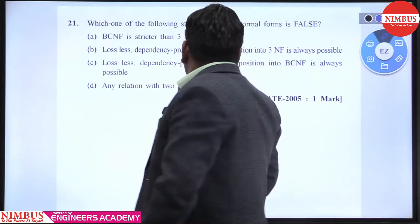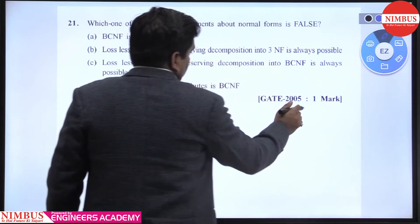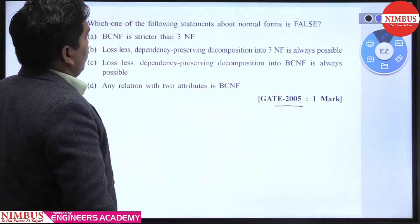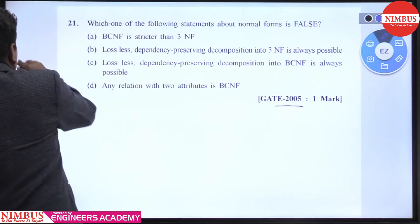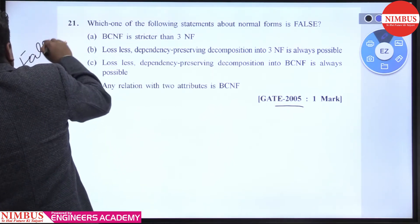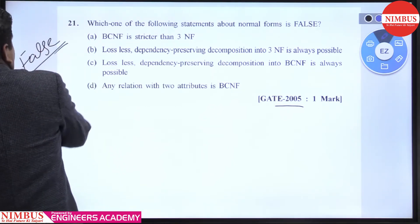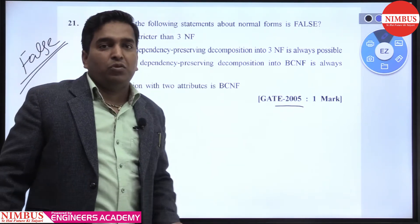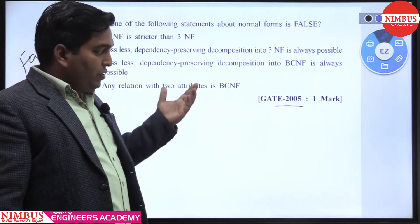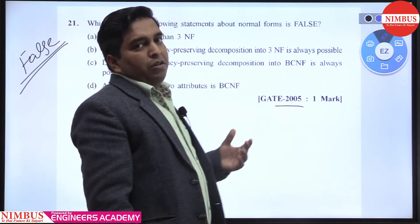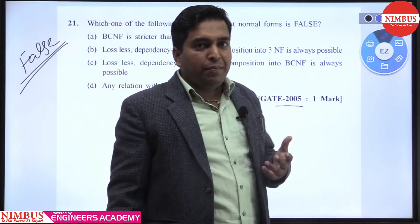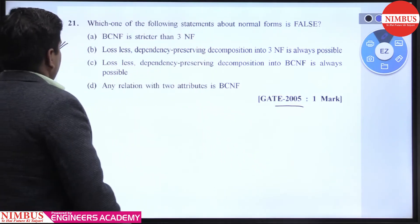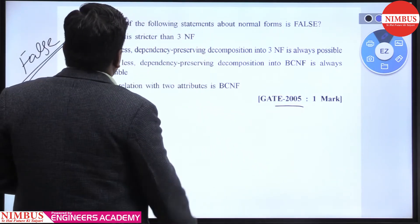Hello students. This is GATE 2005 question, which asks: which one of the following statements about normal forms is false? It is asking about the false statement. There are four options given. This type of question also came in GATE 2020, which we already discussed when we solved that gate paper. The first option is about BCNF.